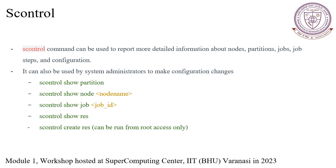The command scontrol show job [jobID] retrieves detailed information about a specific job, including its state, resource allocation, start time, end time, requested and allocated resources, and associated job steps. This command helps users track the progress of their jobs and obtain information about resource utilization. The command scontrol show res retrieves information about reservations in SLURM, providing details about defined resources, their characteristics, availability and location status. This information is valuable for monitoring and managing resource utilization within the cluster.